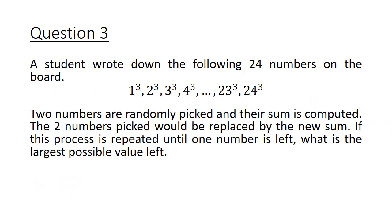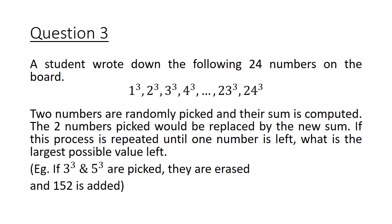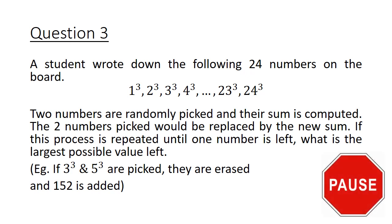Moving on to question 3. A student wrote down the following 24 numbers on the board. Two numbers are randomly picked and their sum is computed. The two numbers picked will be replaced by the new sum. If this process is repeated over and over until one number is left, what is the largest possible value left? What this means is that if 3³ and 5³ are picked, both numbers are erased and the number 152 is added. Pause the video here and give this question a good try.